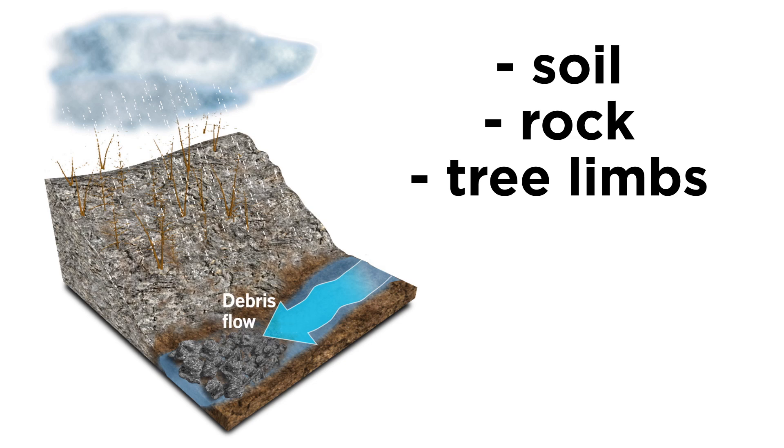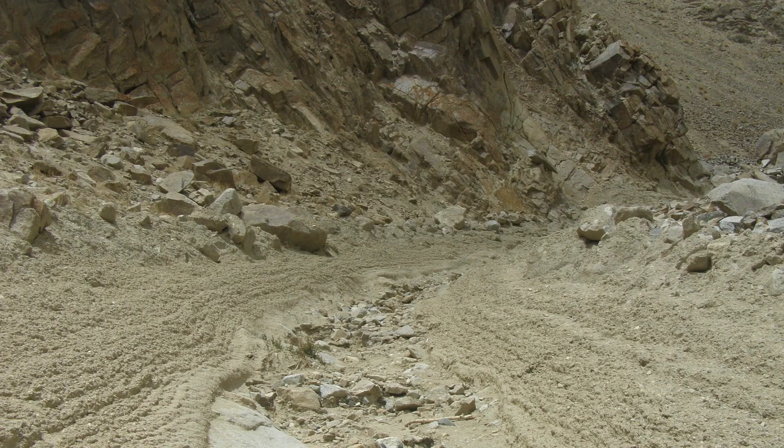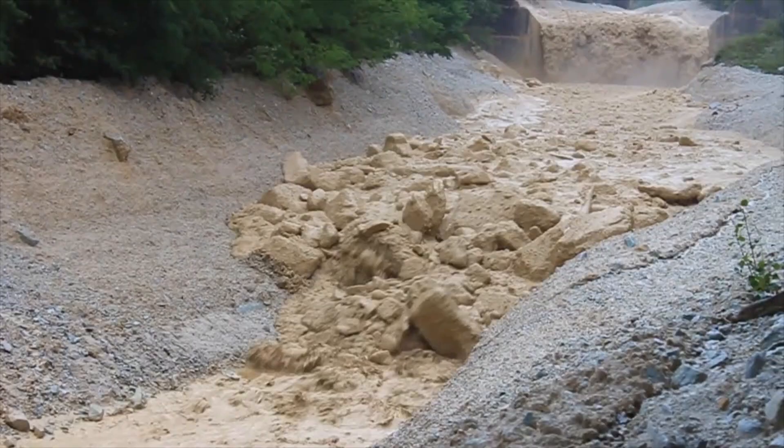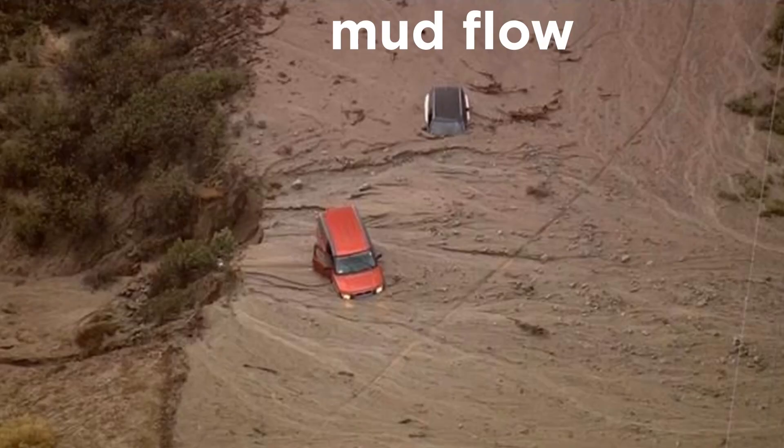Debris flows are masses of soil, rock, and often tree limbs that flow down mountainsides, eventually following drainage patterns into streams and continuing to flow downstream until the slope becomes too shallow and they run out of gravitational potential energy.